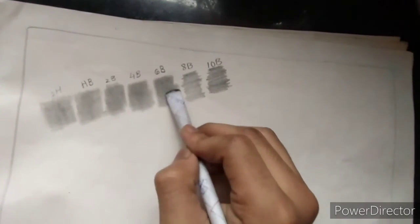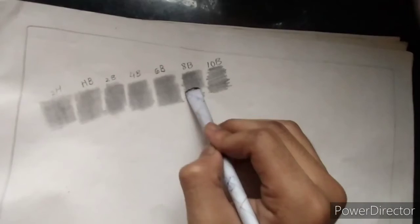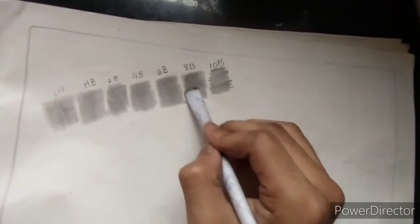As you can see, 2H is lighter and 8B and 6B, it is darker.